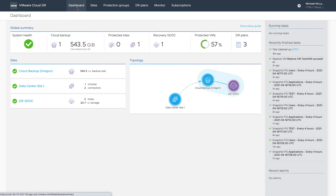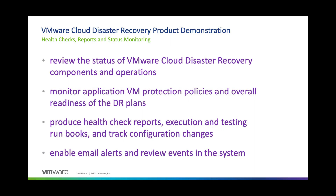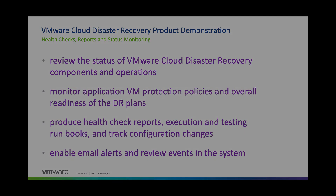Let's review what we have covered in this demonstration. From the SaaS Orchestrator UI, we can easily see and review the status of VMware Cloud Disaster Recovery components and operations, track the on-prem application VM protection policies and protection groups, monitor the overall readiness status of the DR plans, produce detailed health check reports, execution runbooks, and plan configuration reports that are ready to download and share. We can set up email alert mechanisms for your administrative team and review events and alarms for all parts of the VMware Cloud Disaster Recovery setup. This level of visibility, detail, and tracking makes VMware Cloud Disaster Recovery easier to manage and provides a higher degree of confidence that when disaster arises, you will be prepared for recovery to the cloud.